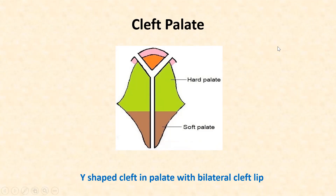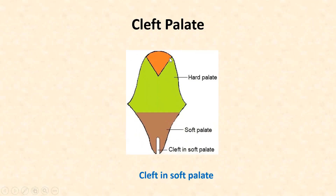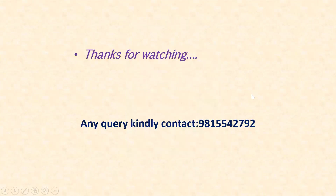In this figure we appreciate a Y-shaped cleft in the palate with a bilateral cleft lip, where the defect in the anterior portion of the palate is associated with a defect in the neighboring upper lip. The cleft may also be limited to the soft palate, as shown in another figure. One must appreciate the different types of cleft possible in cleft palate. Thank you for your time.